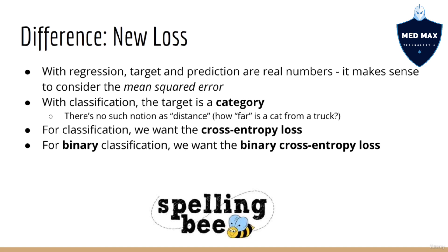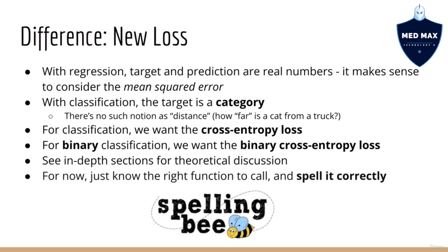The reasoning behind the cross entropy loss is quite a bit more complicated than the mean squared error, so we won't discuss that theory in this lecture. If you want to learn more, then you should check out the in-depth sections of this course. For now, all you really need to know is the PyTorch API, since as you recall, this course is not about mathematical theory, but rather how we do things in PyTorch. Therefore, your job really is knowing the right function to call and spelling it correctly. Indeed, in this computer science course, what matters isn't your math skill, but your spelling ability.